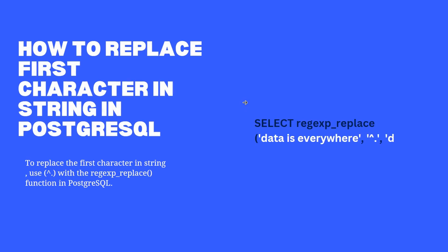To replace the first character in a string, we use the caret and dot symbols (^.) with the regexp_replace function. The syntax is: after SELECT, specify regexp_replace with three parameters — source string, old string, and new string. The important part is the symbol caret-dot (^.), which represents the first character of any string. Whatever string is provided, it represents the starting letter of that string. For example, 'D' would be represented by this symbol and replaced by the new string 'DEY'.